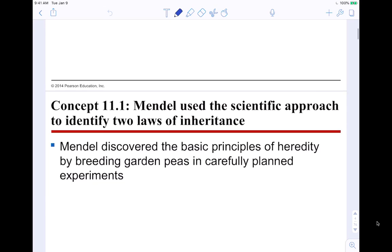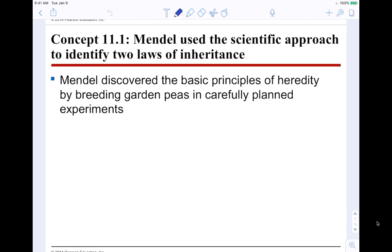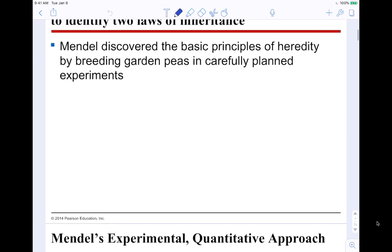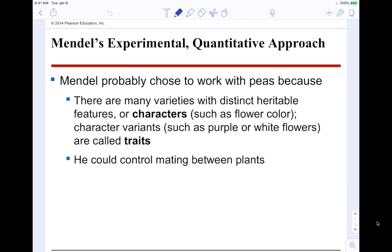Mendel used a scientific approach to identify two different laws of inheritance: the law of independent assortment and the law of segregation, which we'll get to in a bit. He discovered the basic principles of heredity by breeding garden peas in carefully planned experiments. He used a quantitative approach — doing a whole bunch of different experiments because the more you repeat something and get the same result, the more it becomes a trend you can predict.